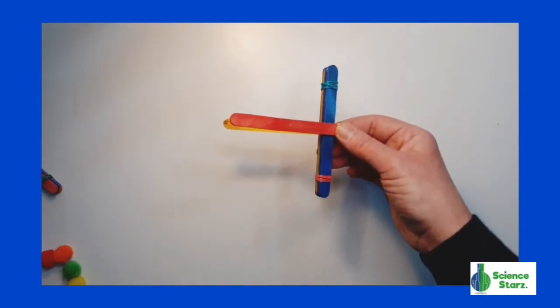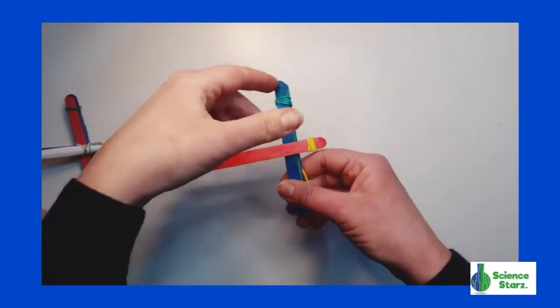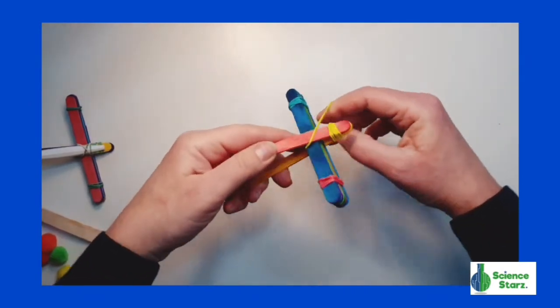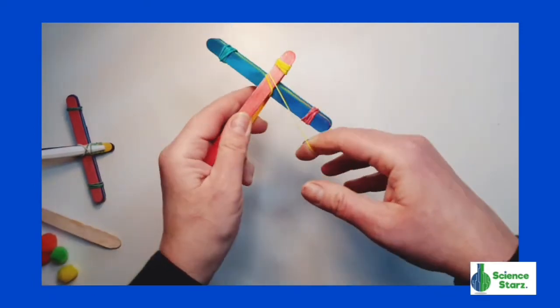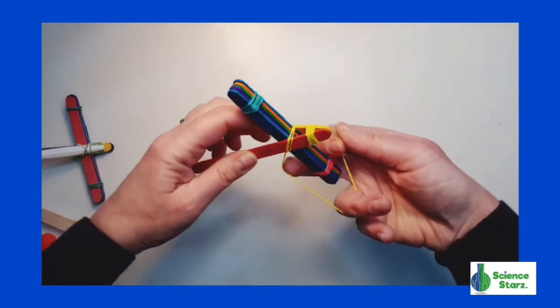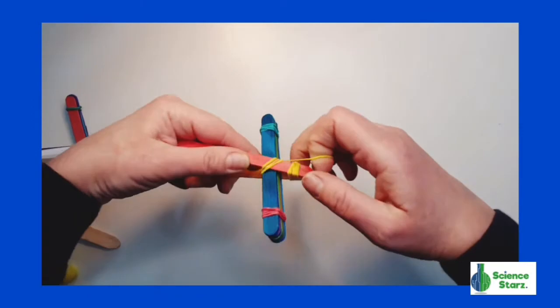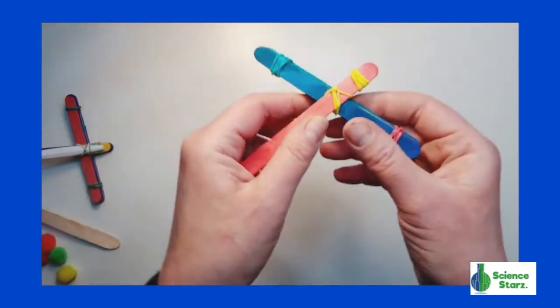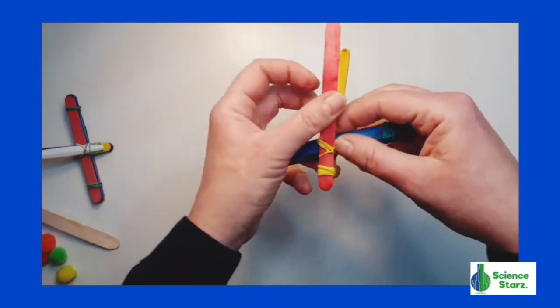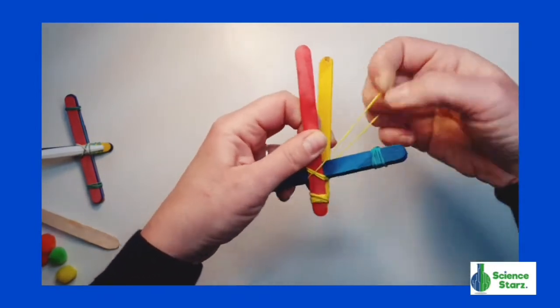Now, we're going to secure the two stacks of sticks together, wrapping the elastic diagonally. If you can see what I'm doing there, I'm wrapping diagonally and then I'm doing diagonally the other way so it looks like an X.